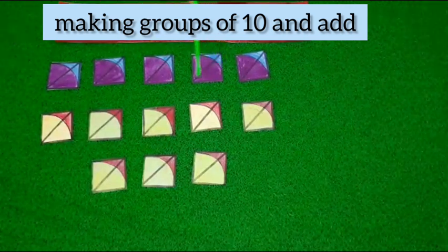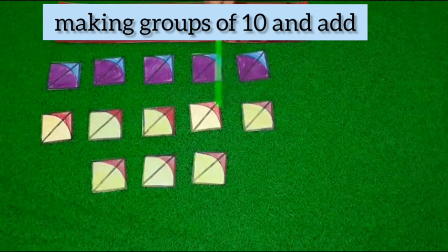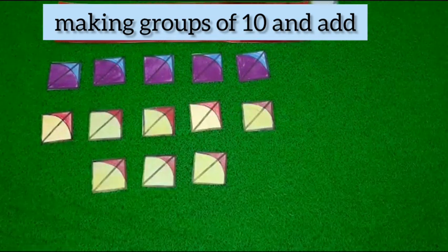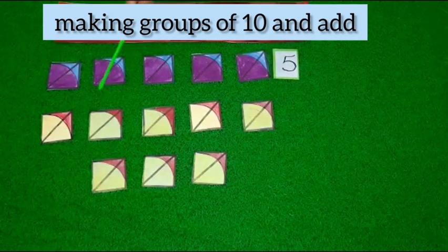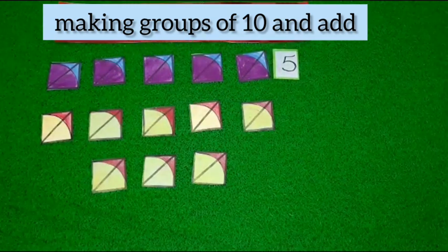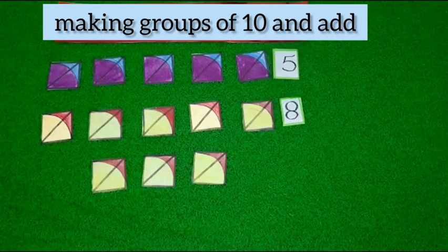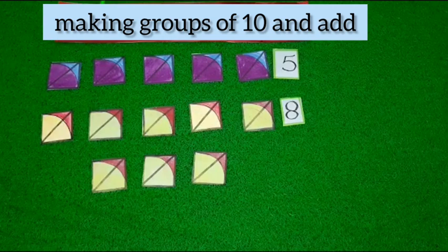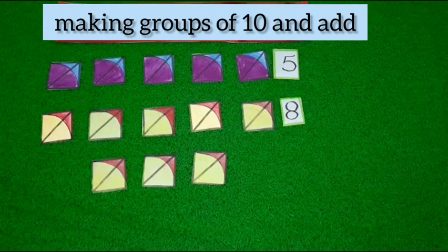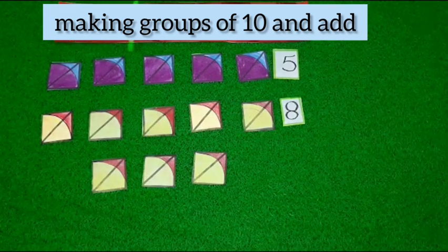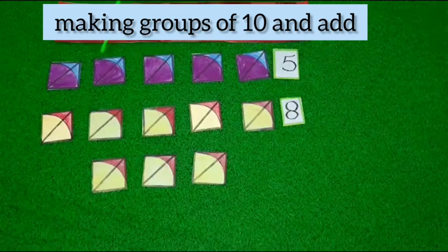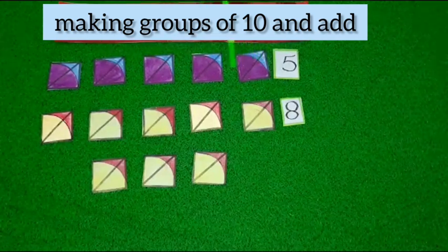Here we have beautiful kites. Some are yellow and others are blue. We have five blue kites and the number of yellow kites is eight. Today we will make a group of ten. With these five blue kites, I have to make a group of ten — so how many more kites do I need?